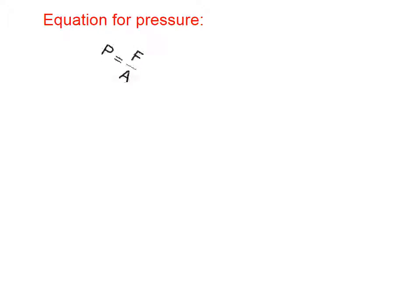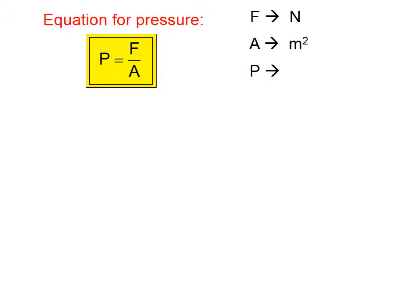The equation for pressure is pressure equals force divided by area. In the SI system, force is measured in newtons. The best unit for measuring area is square meters, and therefore the unit for pressure is the force unit divided by the area unit, which is newtons per square meter.